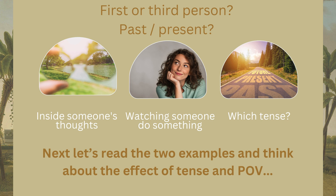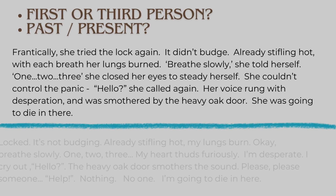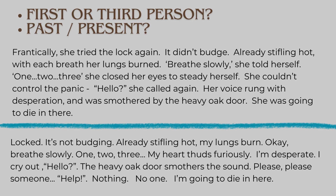Let's have a look at two examples and think about the effect of tense and point of view — the same story told in two different ways: one first person, one third person; one past, one present. 'Frantically, she tried the lock again. It didn't budge. Already stifling hot, with each breath her lungs burned. Breathe slowly, she told herself. One, two, three. She closed her eyes to steady herself. She couldn't control the panic. Hello, she called again. Her voice rung with desperation and was smothered by the heavy oak door. She was going to die in there.'